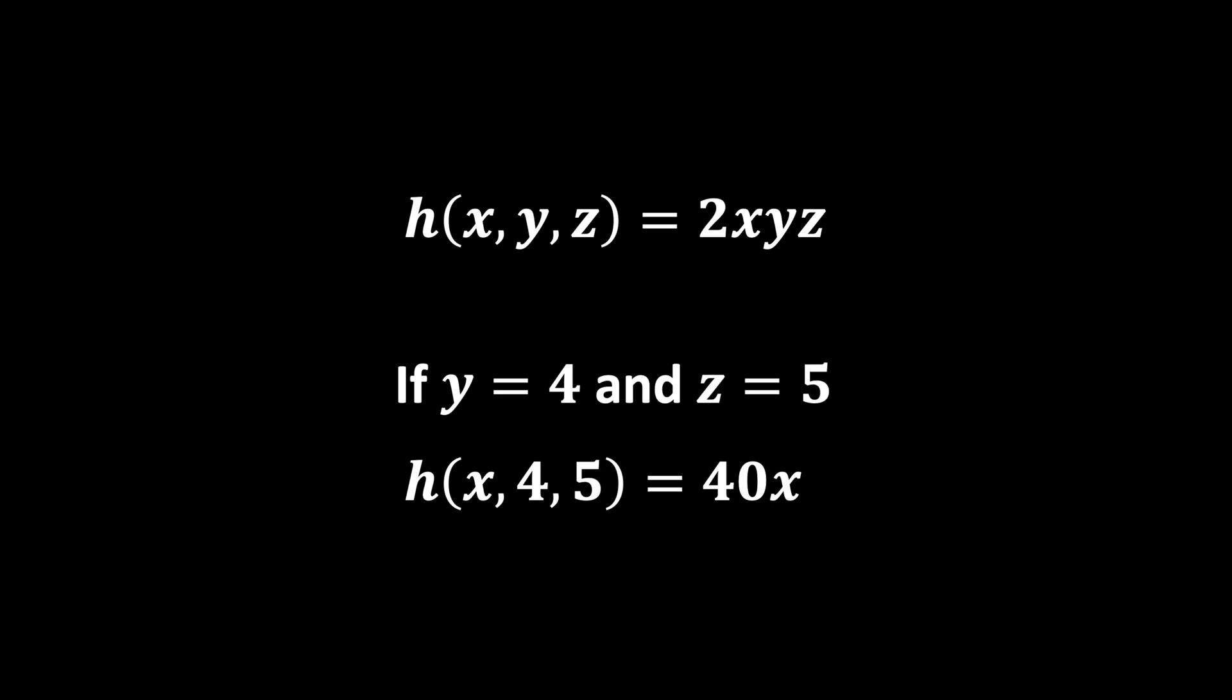When taking a partial derivative of a function with respect to one of its variables, we treat the other variables as constants. It helps us understand how our function changes with respect to that specific variable, leaving everything else untouched.